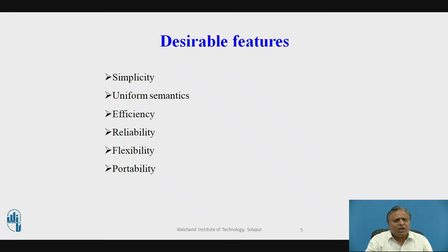Portability has two aspects. First, the message passing system itself should be portable — a new IPC facility on another system can be constructed using the basic design of an existing IPC. Second, applications written using IPC protocol primitives should be portable to new systems. This requires handling heterogeneity using an external data representation format across computers with different architectures.